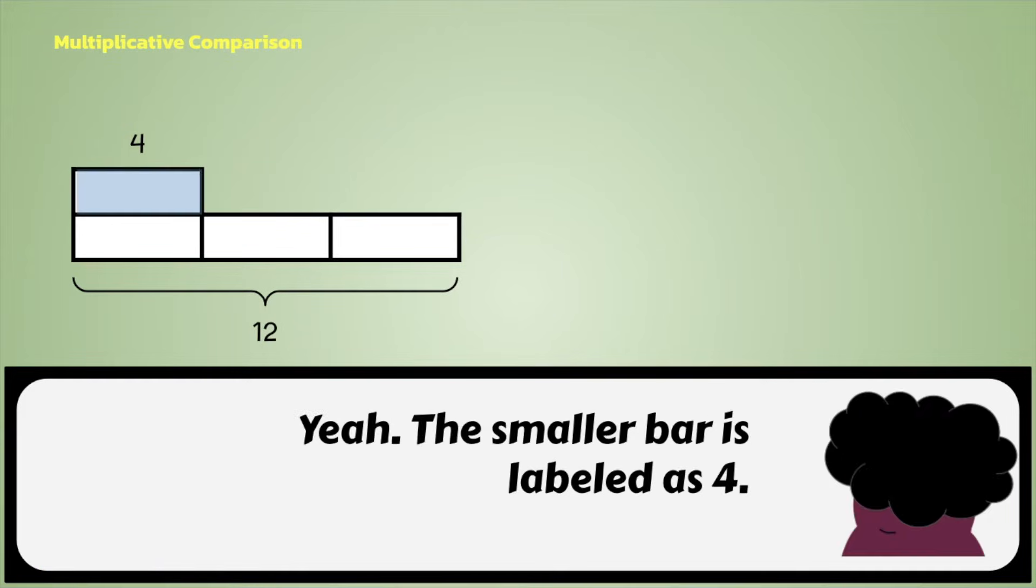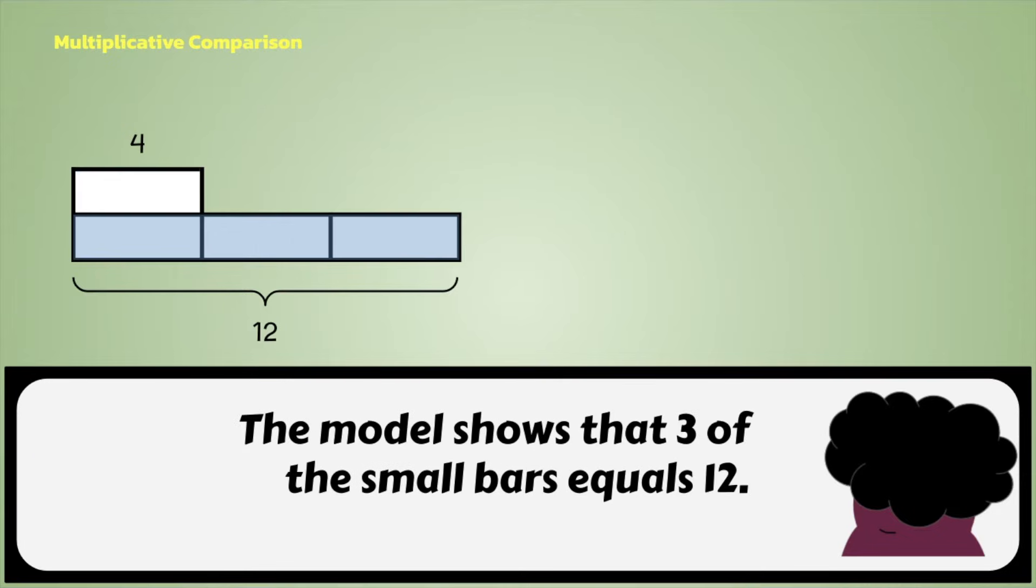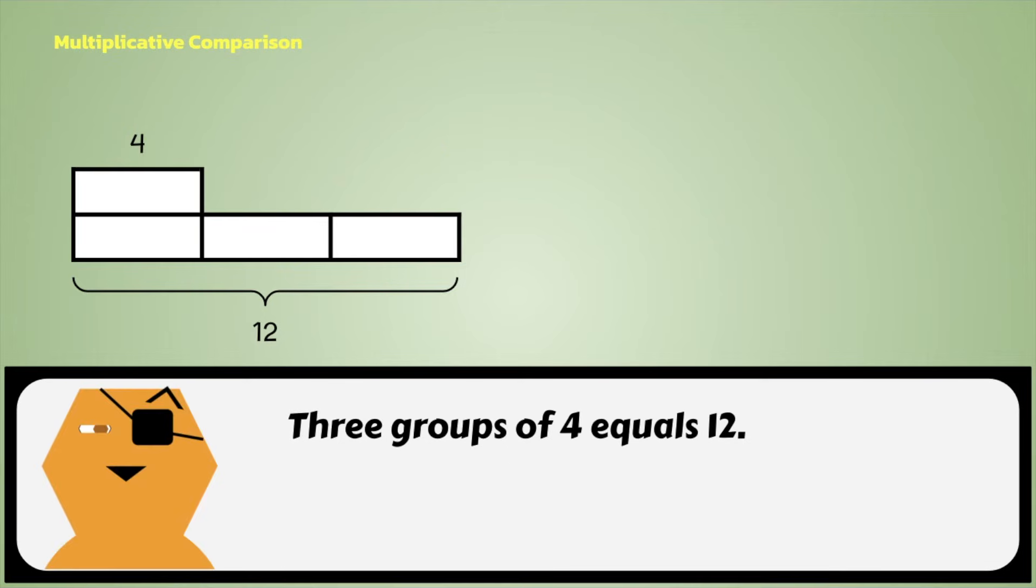How many times more? Yeah. The smaller bar is labeled as 4. The model shows that 3 of the small bars equals 12. 3 groups of 4 equals 12. So 12 is 3 times as many as 4.